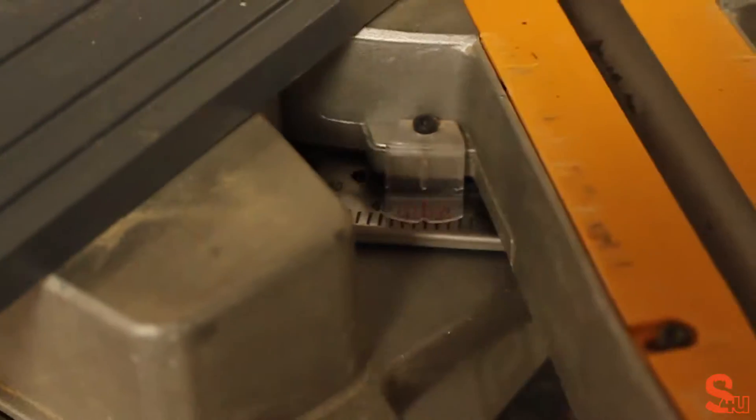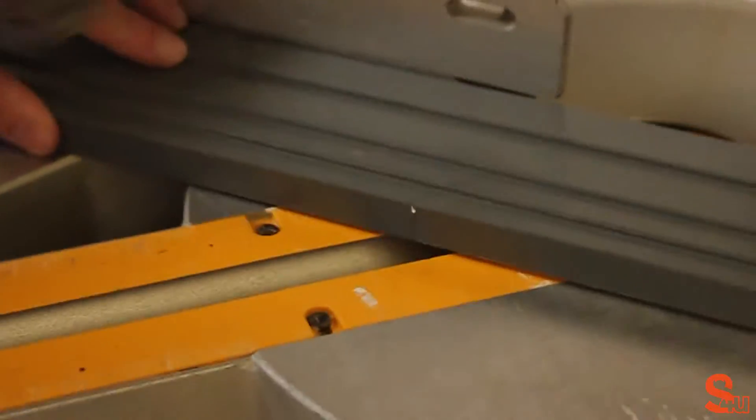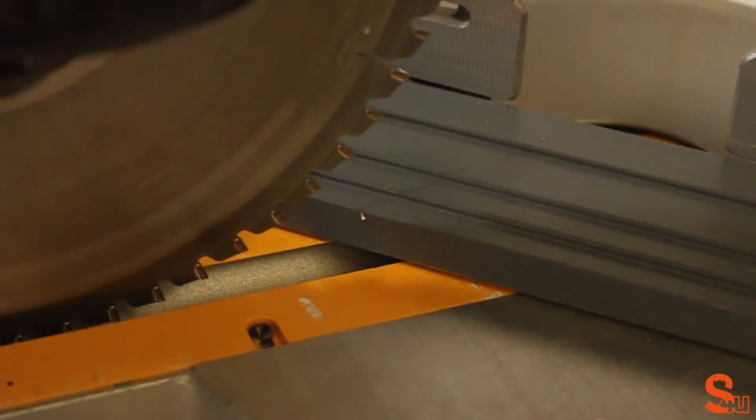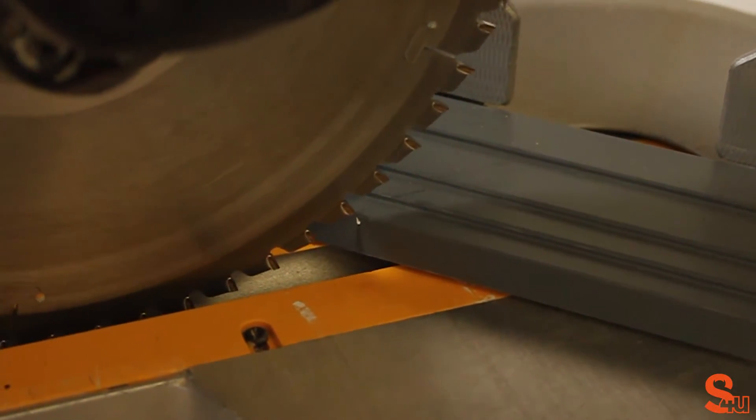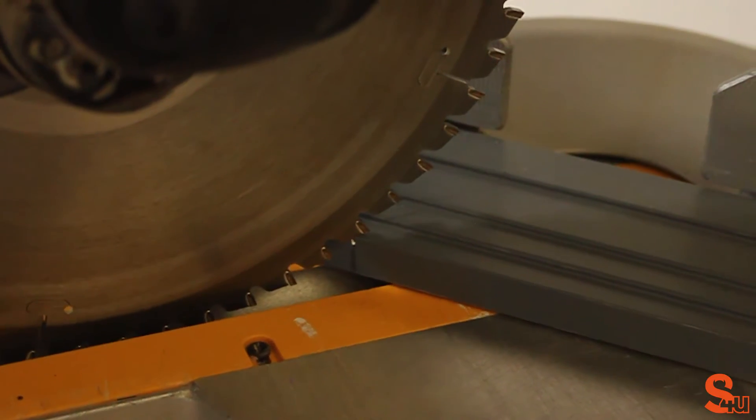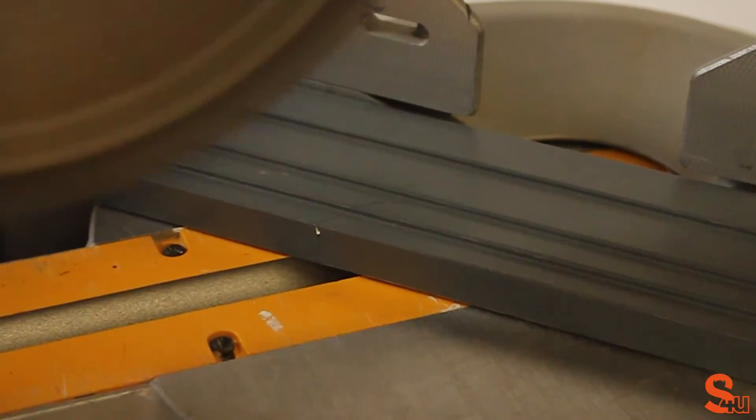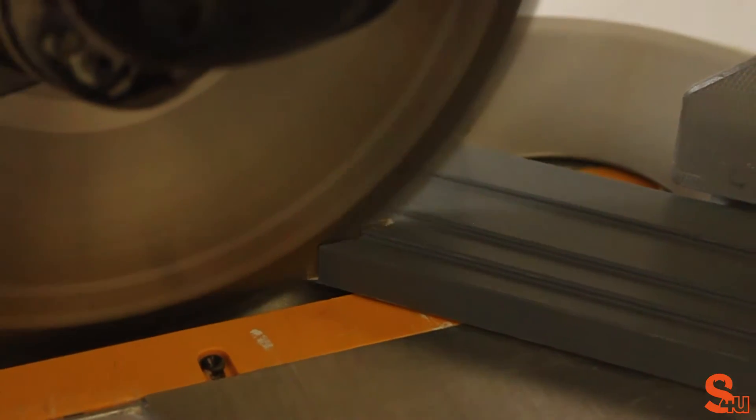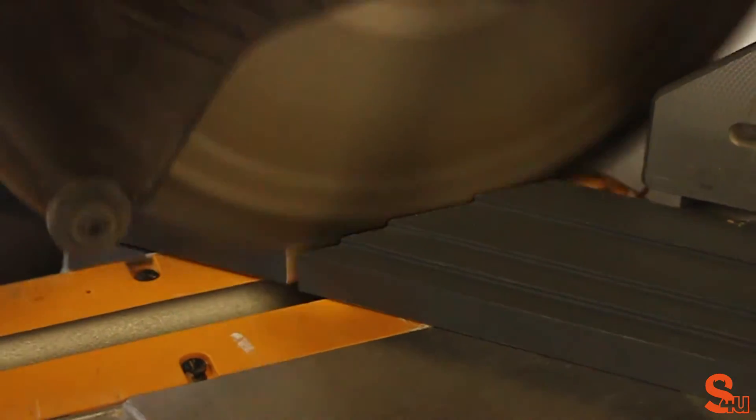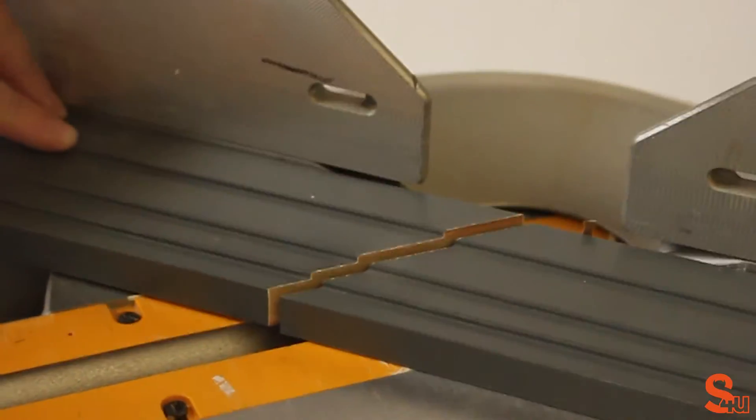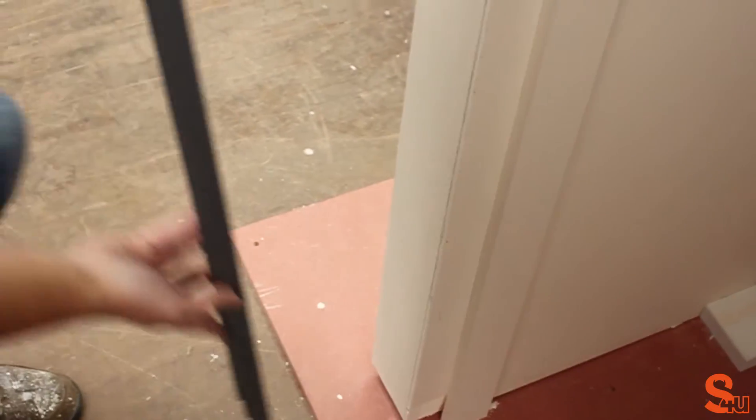Set the mitre saw to 45 degrees and then make the first cut. If you don't have a mitre saw, then you can also use a mitre box, but in this case we had one to hand so we used it.